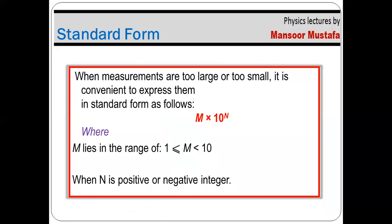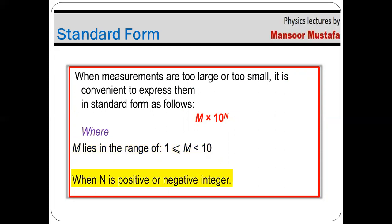The criteria to convert a number into standard form is that the number must be written in the form of m multiplied by 10 to the power n. The value of m must be greater than or equal to 1 and less than 10 — in simple words, m must be between 1 and 9. And n is a positive or a negative integer.